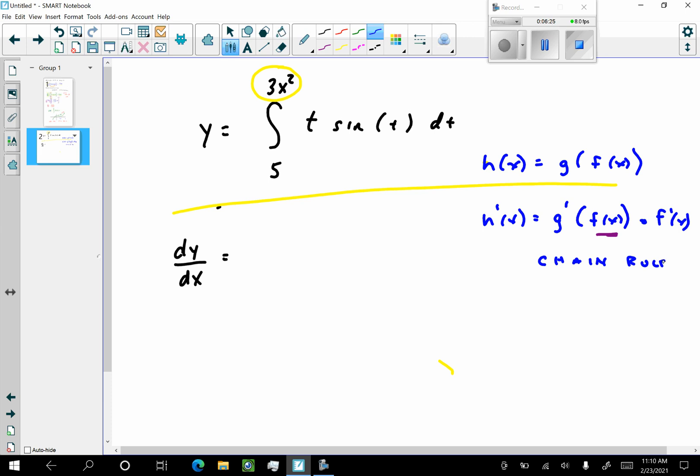And what I'm going to do is I'm going to apply the chain rule to find dy/dx. Because the outside is this accumulation thing from 5 to this variable here. And so this part right here, g prime of f(x), is simply going to be 3x² sin(3x²). But what I have to do now I have to multiply that by the derivative of the inside.